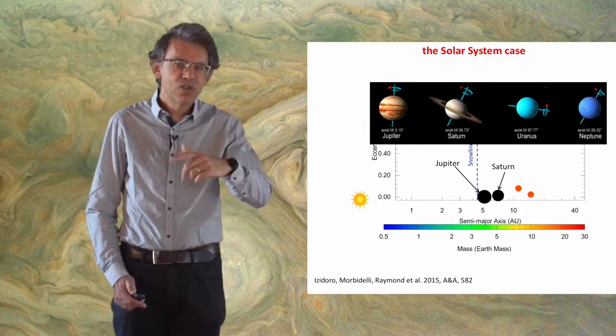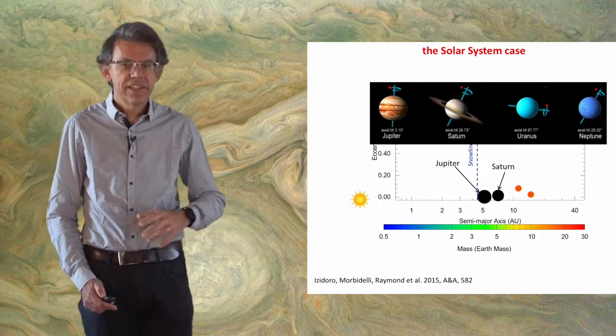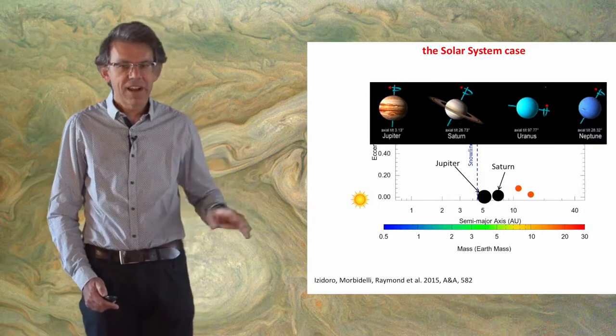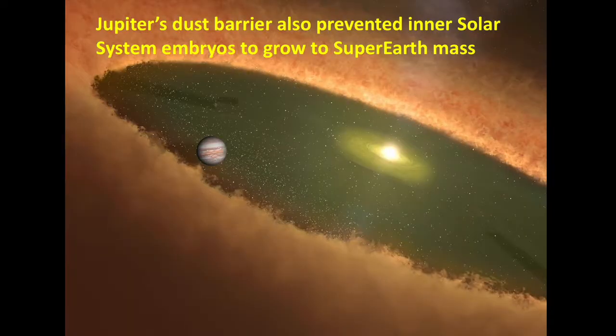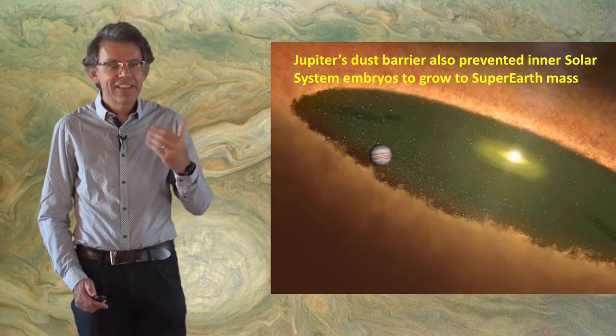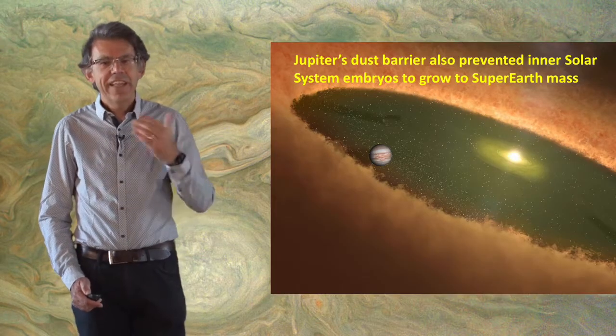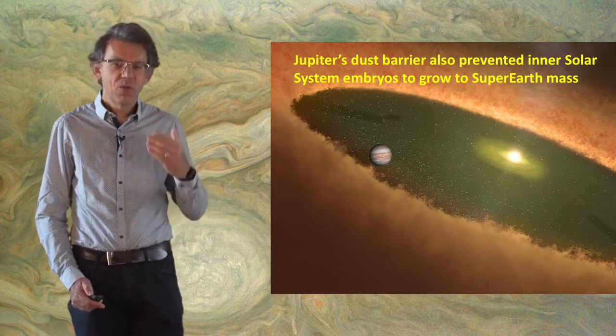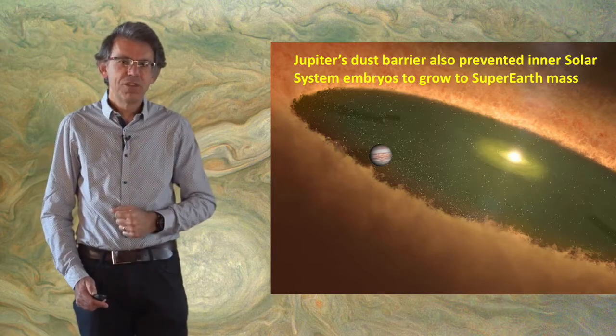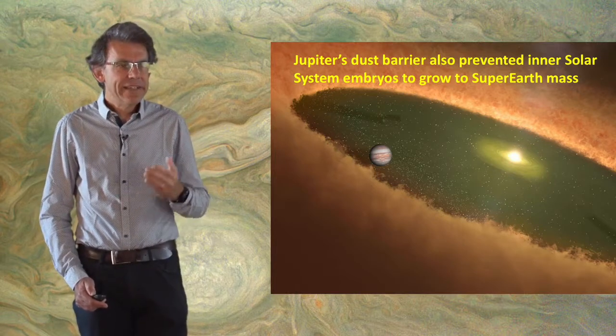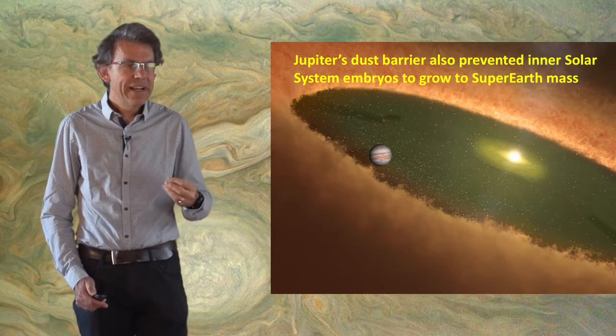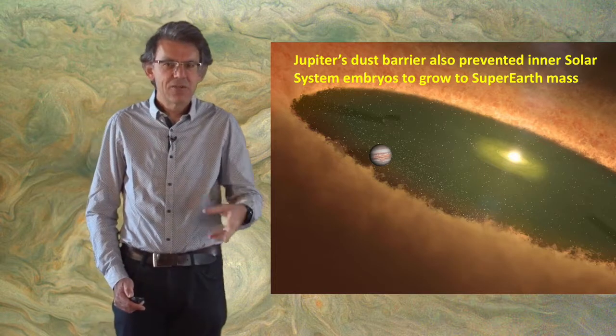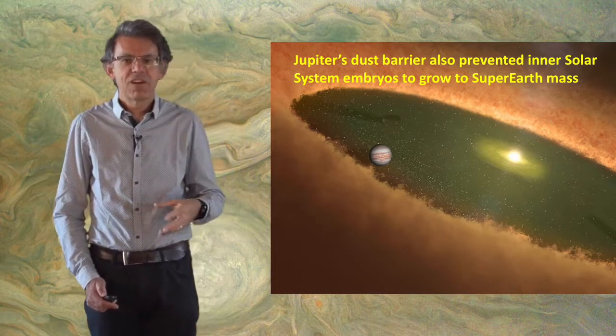Note that the spin axis of Saturn is also somewhat tilted, but this is due to some complicated resonant dynamics understood by specialists. In addition, Jupiter creates another barrier—a barrier against the drift of dust—so that the inner system within the orbit of Jupiter remains depleted in dust and pebbles. This is why the local planetary embryos remained small, about the mass of Mars, and did not grow to super-Earth masses.